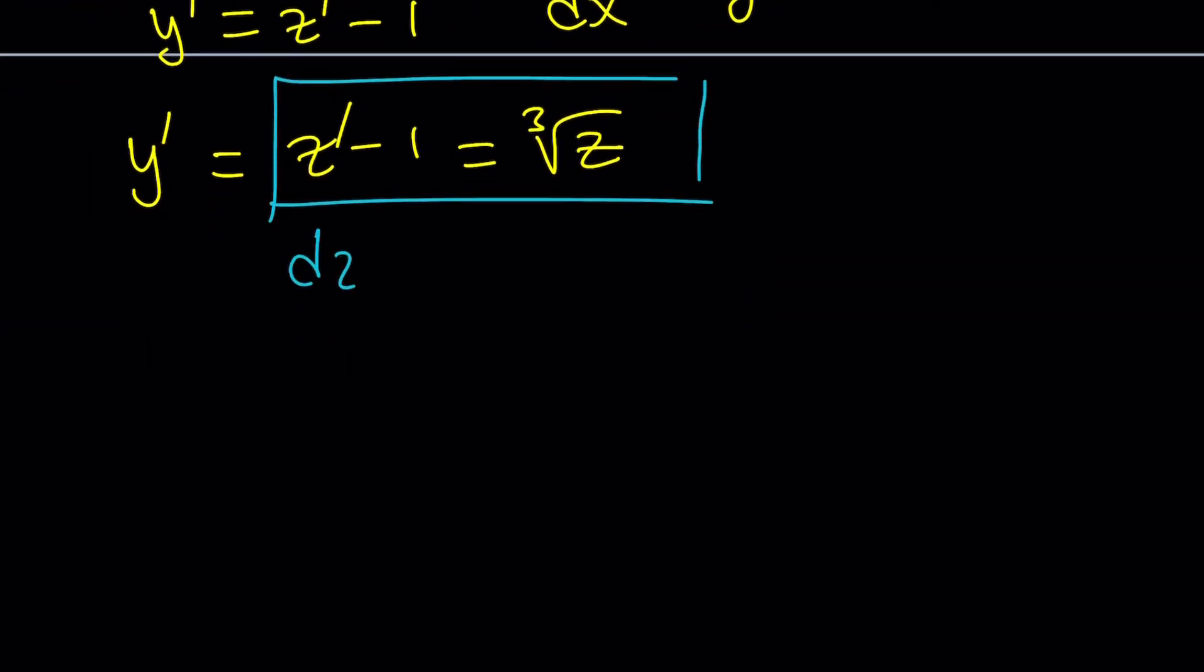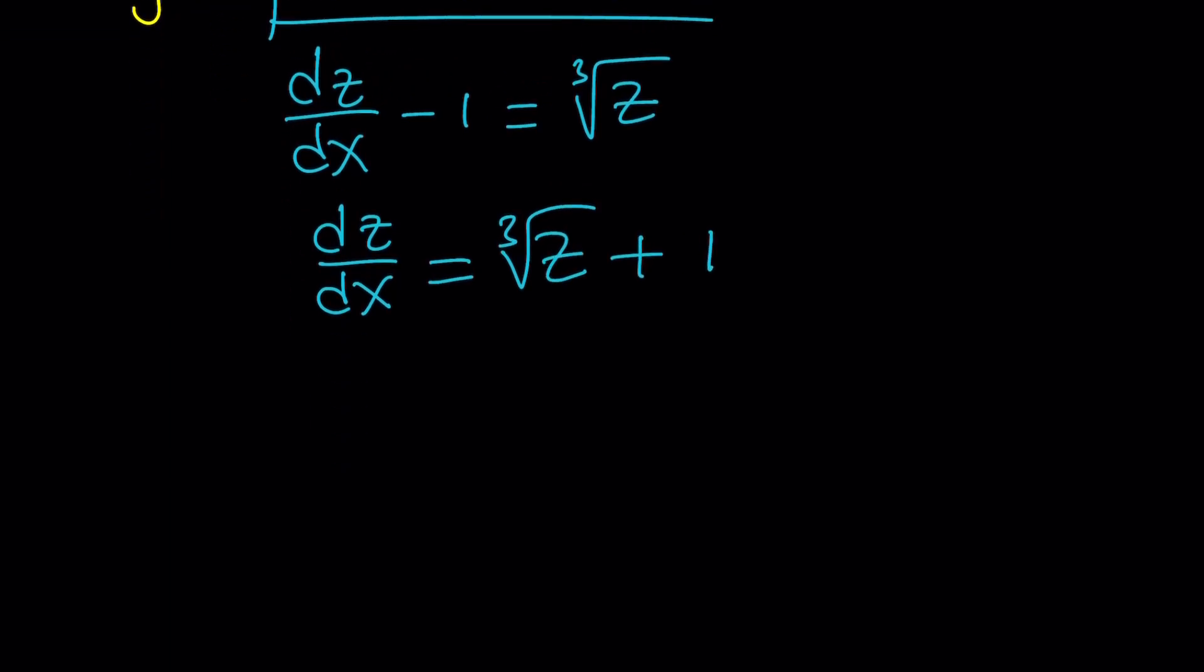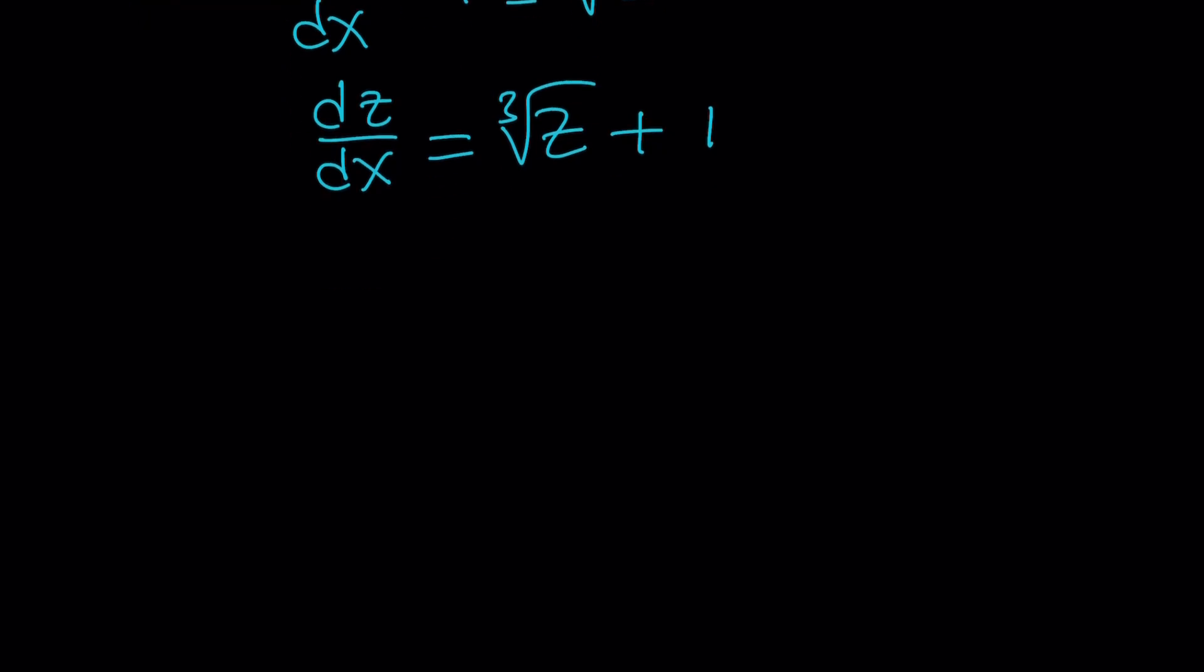So we get dz/dx minus 1 equals the cube root of z. And now, we can add one to both sides. Obviously, you want to isolate dz/dx if you can. Cube root of z plus 1. But how awesome is this? Let's go ahead and separate the variables. So it's going to be awesomer. dz over cube root of z plus 1 equals dx.